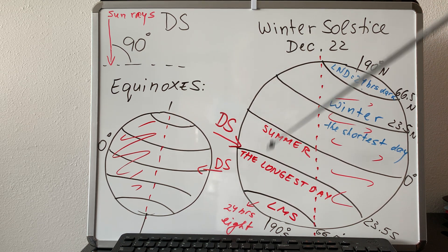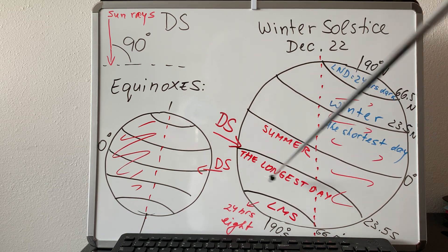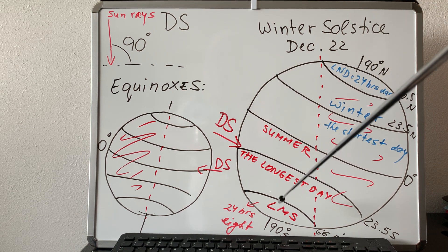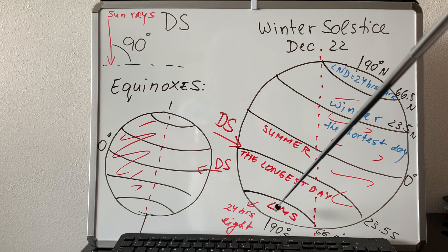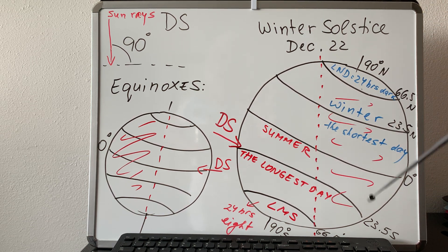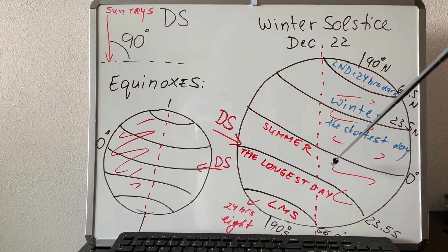In the southern hemisphere during summer, here is the direct sun and here is the land of midnight sun — the pole area, which will have 24 hours of light on that day. It's between 66.5 and 90 degrees south. There is no sunset there — 24 hours of light on December 22nd. The equator always has 12 hours day and 12 hours night, because the circle of illumination cuts the equator into two equal halves.